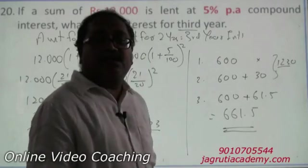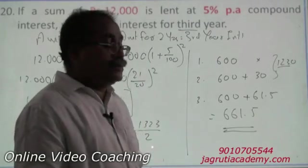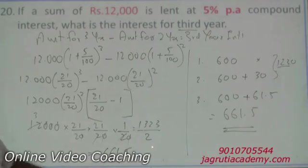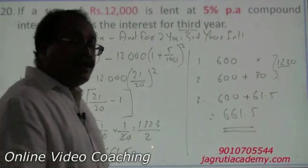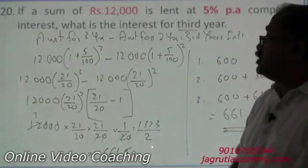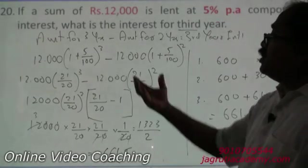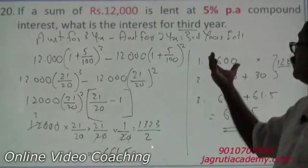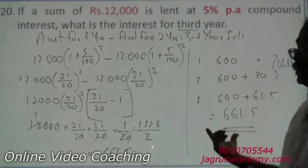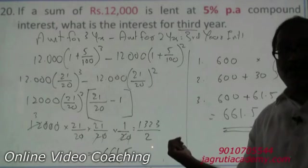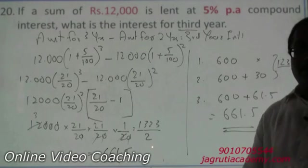So 661.5 is your third year interest — we got the same answer from both methods. The formula approach is time-consuming, but I request you to follow the second method when answering questions about third year or fourth year interest.